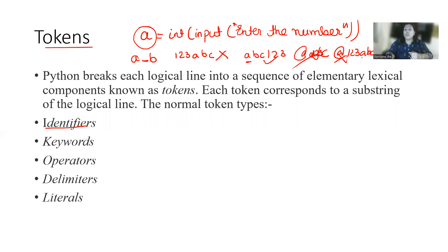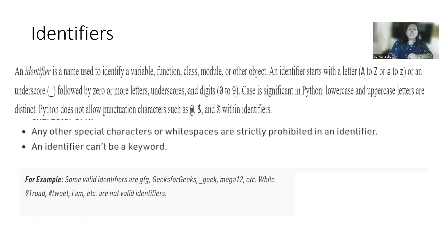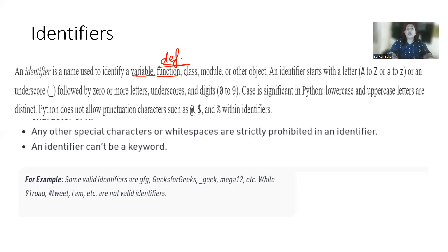So that is the identifier. An identifier is a name used to identify a variable, function — just like D, E, F — that you will study in other classes. Functions are the predefined functions that we have already initialized in our Python programming library. Also class, modules — there are so many modules that we are importing. And any other objects. So these are the identifiers, not only the variables.